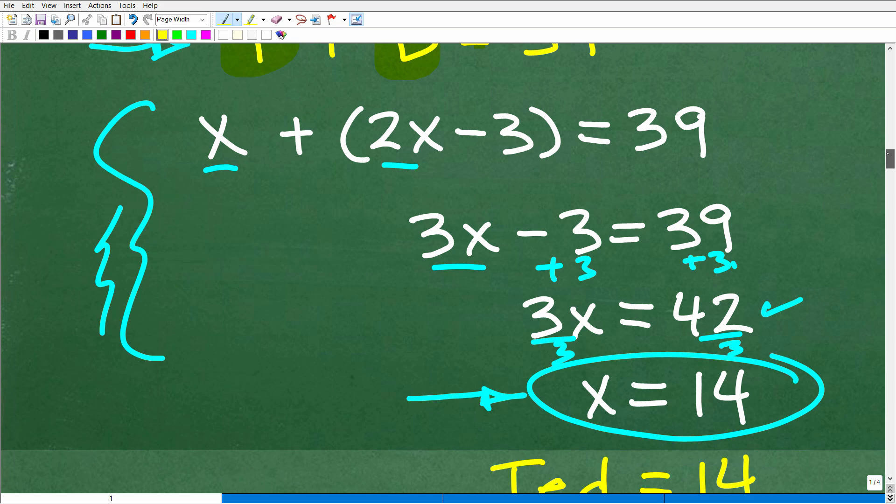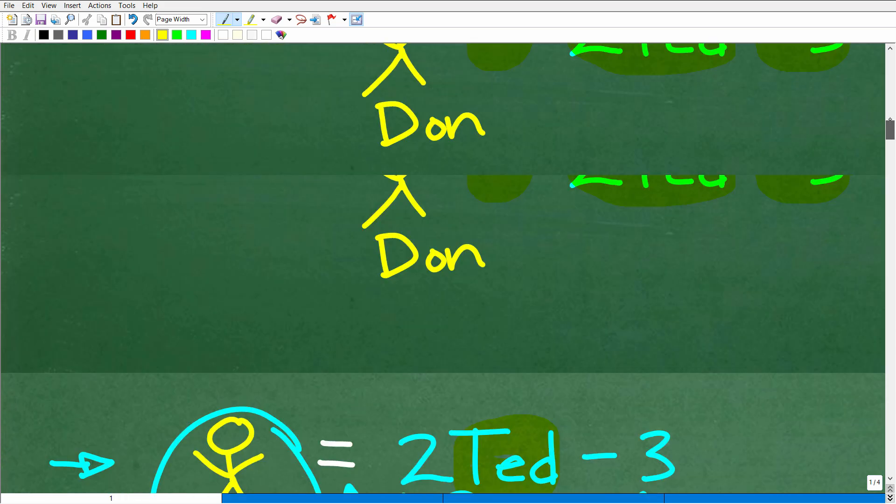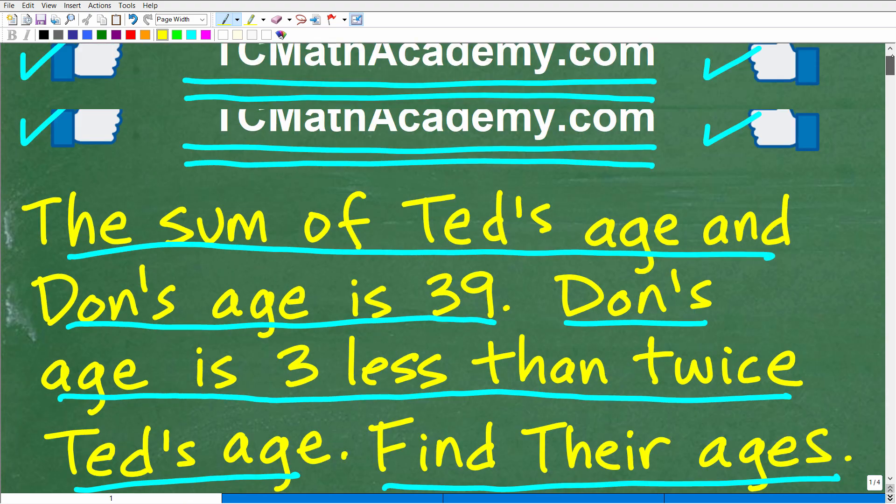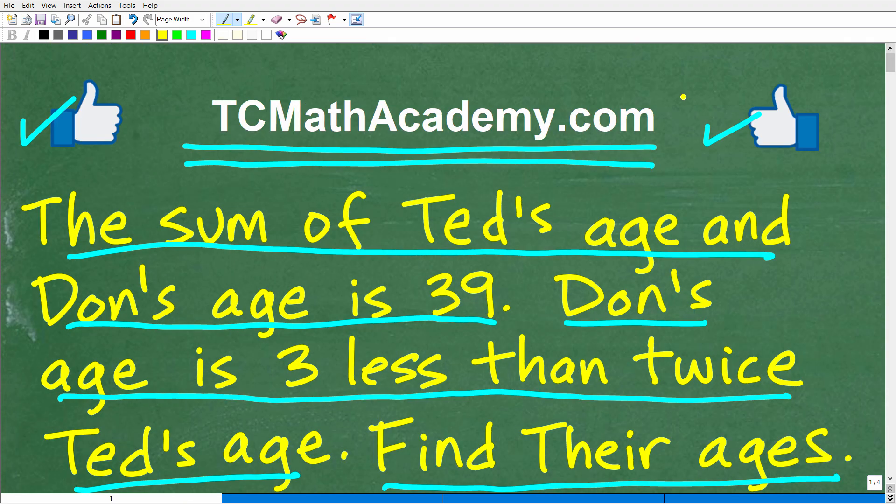Okay, so on the scale of difficulty in terms of algebra word problems, maybe like a first year algebra course, maybe give this problem a, well, I don't know, like a 5 out of a 10. There's certainly much more challenging word problems. And there's a lot easier word problems, right? So this is kind of a medium level. If you like salsa, you got mild, regular, and then spicy level, right?